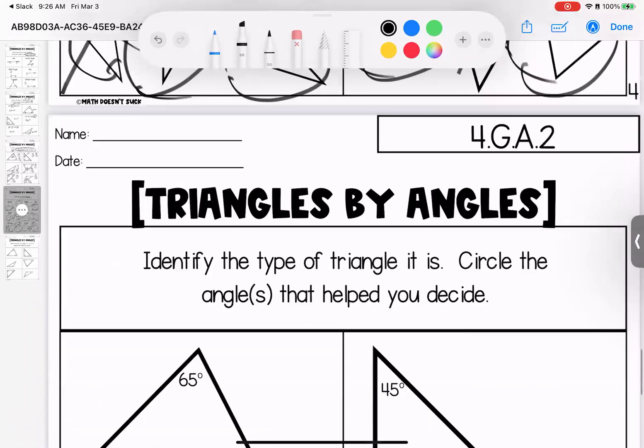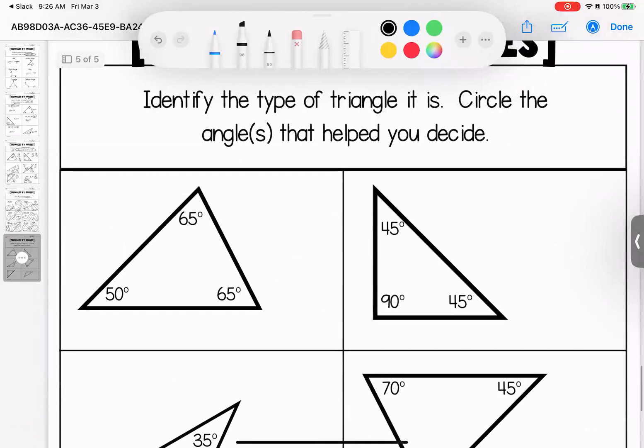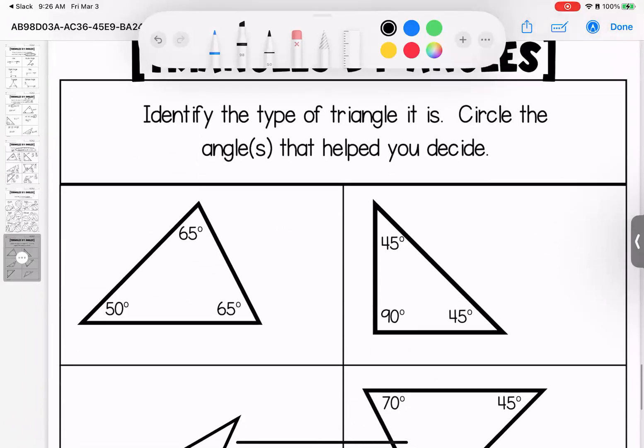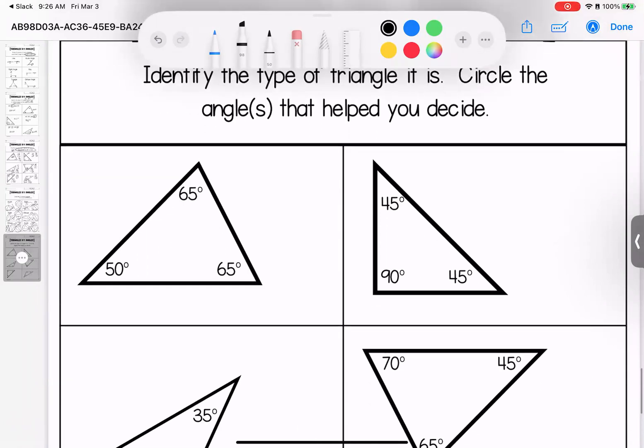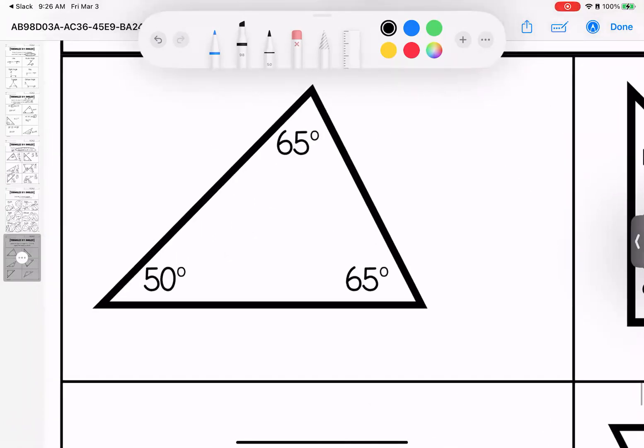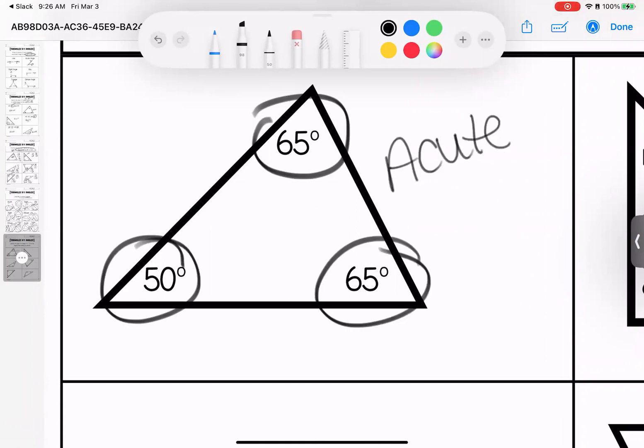All right, my loves. This is the last page where we are identifying what type of triangle it is, and we're circling the angle that helped you decide. So if I look at these, actually, all of these angles helped me decide because in order to be an acute triangle, all three angles have to be less than 90 degrees, so 89 or smaller.